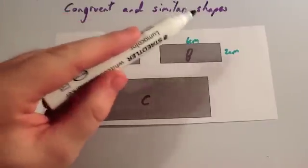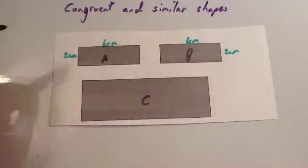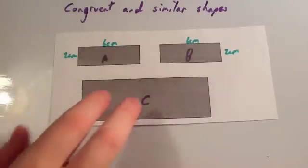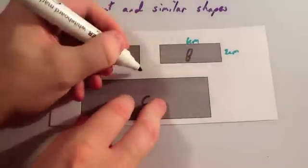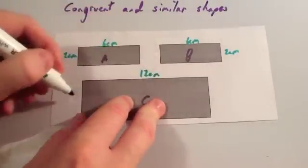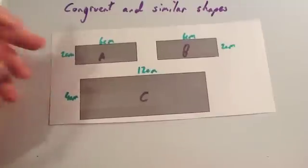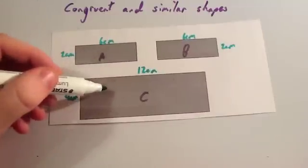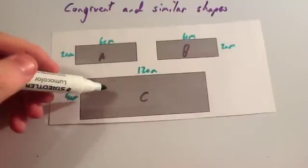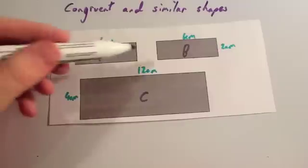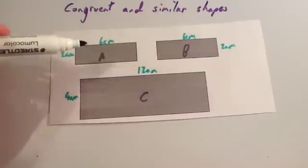If two shapes are similar, that means that one is an enlargement of the other. So this one here, C, I measured it earlier with my ruler and I found this to be 12cm and this to be 4cm. That means that rectangle C is an enlargement of rectangle A, and it's also an enlargement of rectangle B as well.